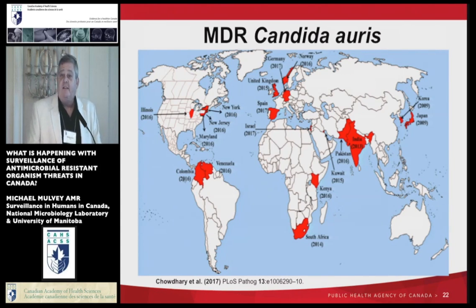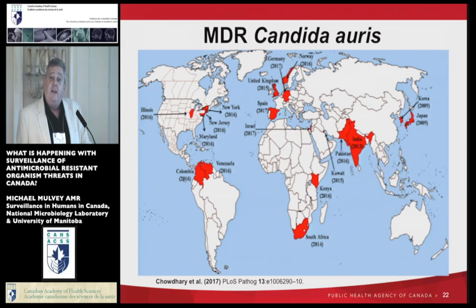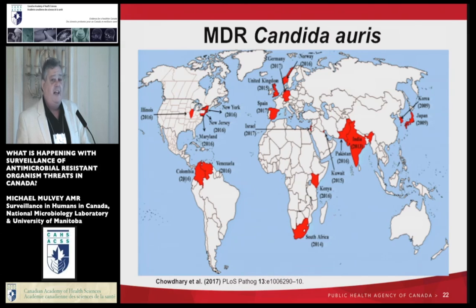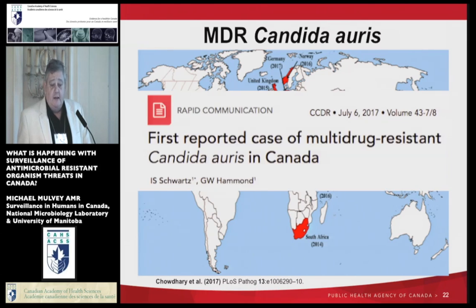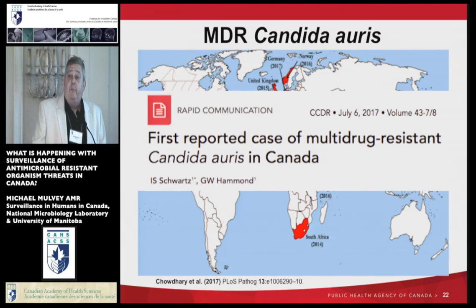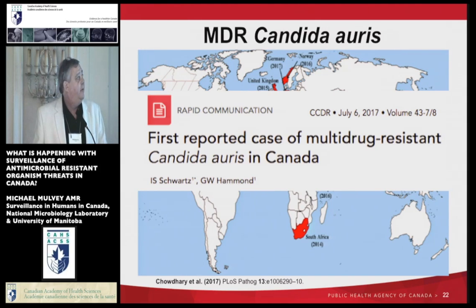The new emerging issue you'll be hearing more about is multidrug-resistant Candida auris. This was first reported in Korea and Japan in 2009, and now other countries are reporting this multidrug-resistant strain. Just this May, Canada reported its first case from Manitoba — from a patient who traveled to India and received medical attention there, possibly picking it up from India. This is now on our radar, and I think it's something we need to be paying attention to.